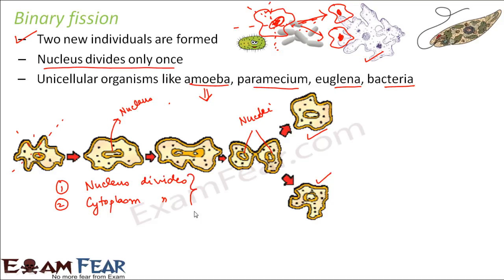The first step of division is nucleus division — the nucleus divides first, followed by division of the cytoplasm. That is how binary fission takes place in amoeba. In euglena, however, the splitting must take place only along a specific plane; it cannot happen along just any plane.